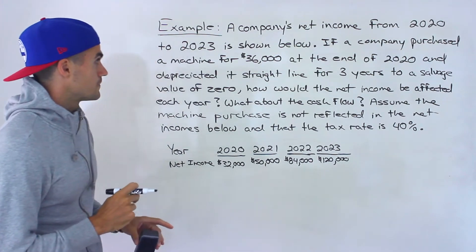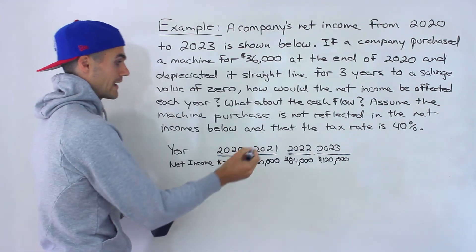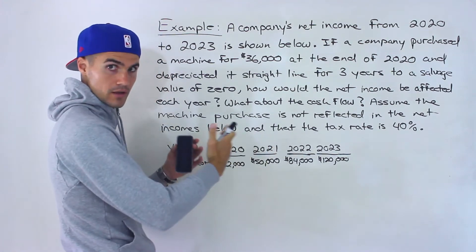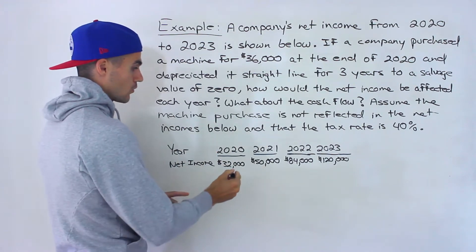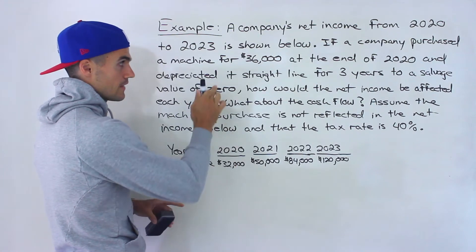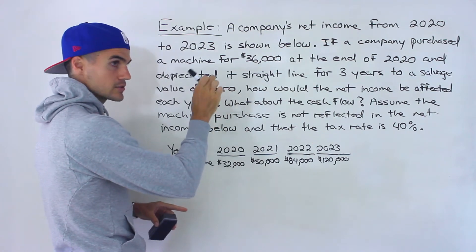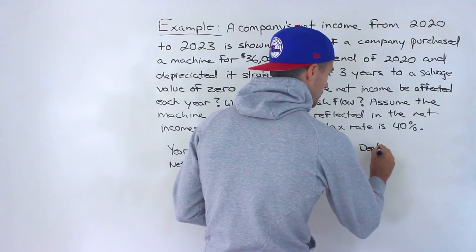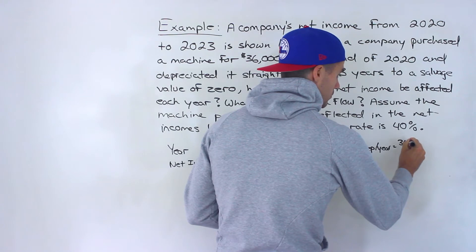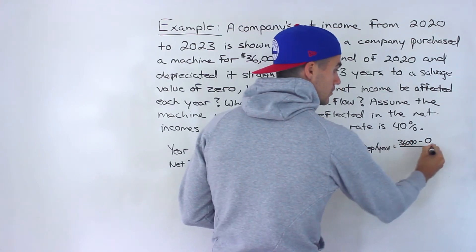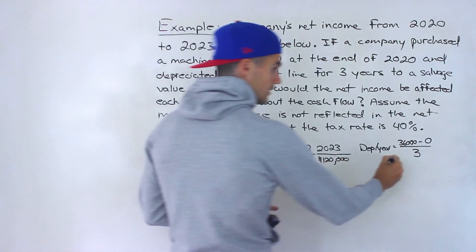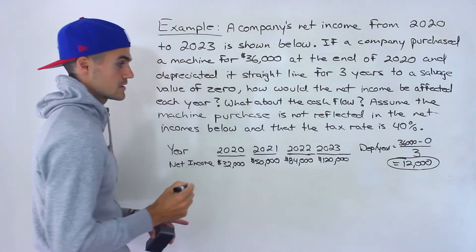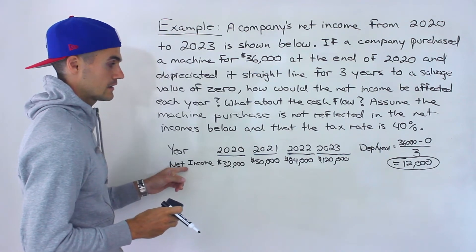We have this machine that we're buying at the end of 2020. We're given these net incomes that are happening throughout the years — the income statement happens throughout a period of time. We're purchasing the machine at the end of 2020 and depreciating it straight line, meaning the depreciation is the same each year for three years to a salvage value of zero. So the depreciation per year is the initial amount minus the salvage value divided by the number of years, giving us $12,000. That's the depreciation expense, and it's not reflected in these net incomes.